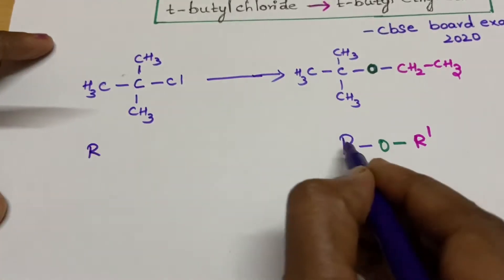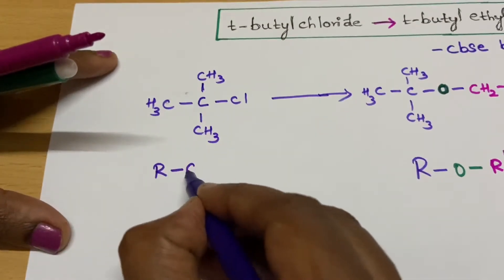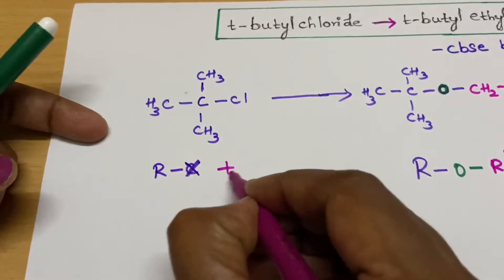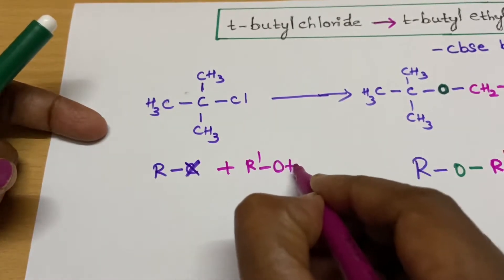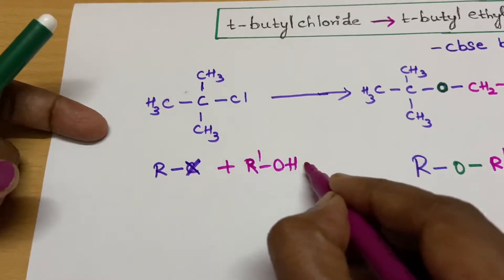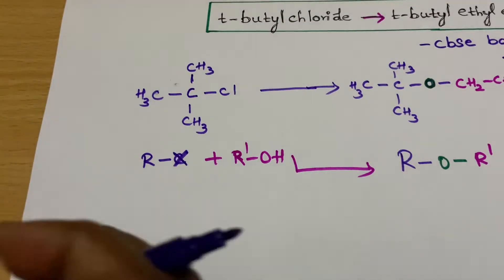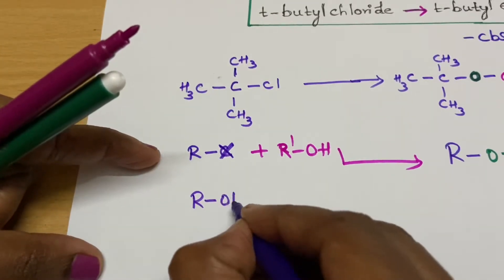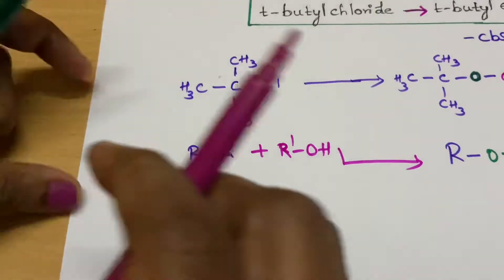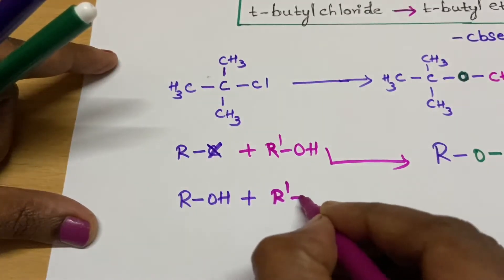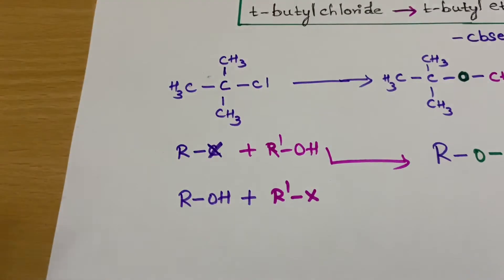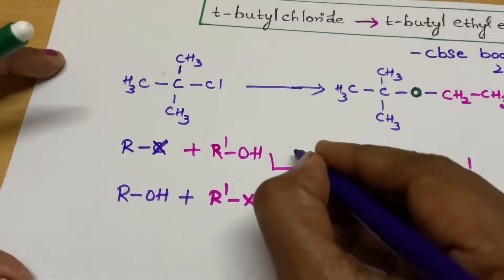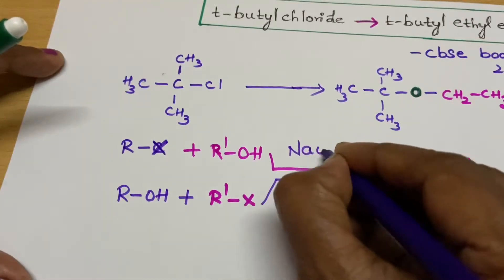The first method: one alkyl part should come as the alkyl halide and the other part should come as alcohol. What is the other way? Here the R part is coming as alcohol and your R dash is coming as your alkyl halide part. Either way you can prepare this, and this happens in presence of sodium hydroxide.